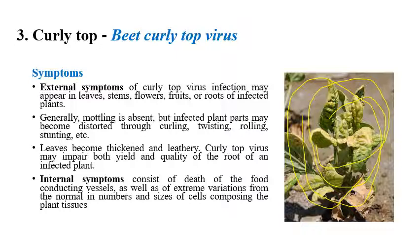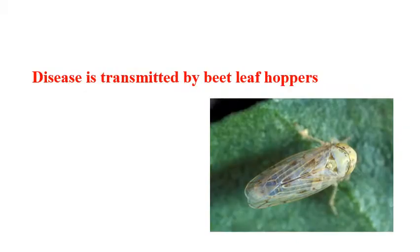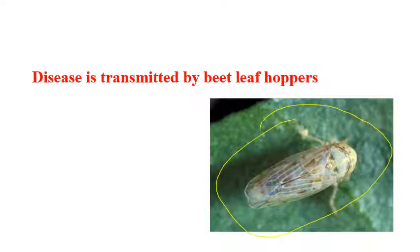Curling of leaves — also known as twisting or rolling — is the main visible symptom. Looking at internal symptoms, the food-conducting vessels are completely destroyed, and the size of cells is greatly reduced compared to healthy tissues. This disease is mainly transmitted by the beet leafhopper. If the beet leafhopper is controlled, this disease can be effectively checked.